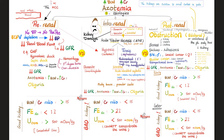Whatever the cause might be, intrarenal azotemia will show low GFR, azotemia — meaning increased BUN in the blood and increased creatinine in the blood — as well as oliguria. It's a bad kidney, so the BUN-to-creatinine ratio is less than 15. The kidney is wasting tons of sodium in the urine, and the kidney is unable to concentrate the urine.